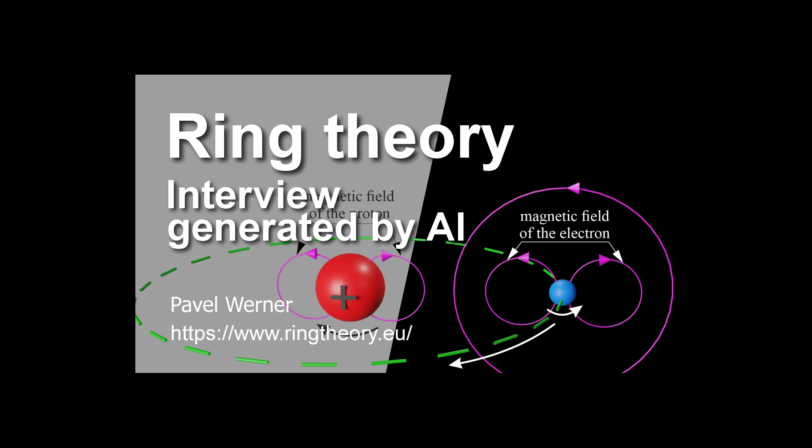So much cooler than just picturing them as boring little spheres. But what about the quarks? Where do they fit into this whole ring-shaped party? Ah, yes. The quarks. Now, in the standard model, quarks are these fundamental particles that make up protons and neutrons. Right. But here's where RT takes a sharp turn. It suggests that quarks themselves might actually be composed of even smaller ring-like structures. Hold on. Are you saying we have rings within rings? In a way, yes. Like those Russian dolls, there might be even smaller structures within those we thought were fundamental.